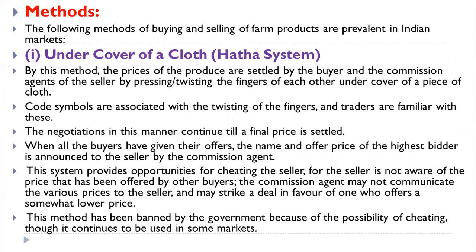Now we see in detail the different methods of buying and selling of farm products prevalent in Indian markets. The first method is under cover of a cloth, locally called the hatha system. By this method, prices are settled by the buyer and the commission agent of the seller by pressing or twisting each other's fingers under cover of a piece of cloth. Poor symbols are associated with the twisting of fingers and all traders are familiar with them. Negotiations continue until a final price is set.